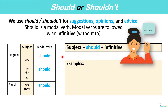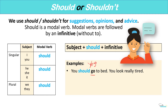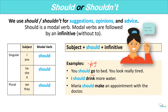Let's look at some examples. You should go to bed — you look really tired. Note that we have should plus the infinitive. We don't say 'you should to go to bed'; we just say 'you should go to bed' without the 'to'. I should drink more water. Maria should make an appointment with the doctor. So we use should for suggestions and opinions.